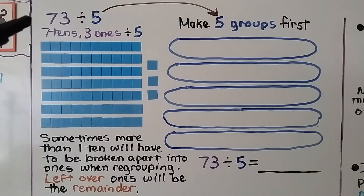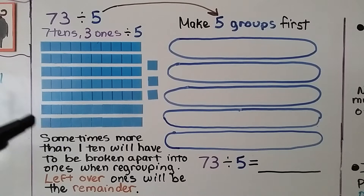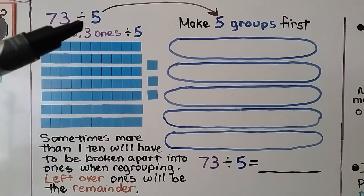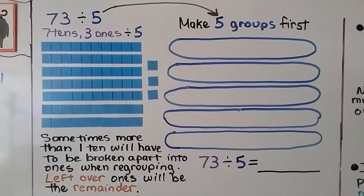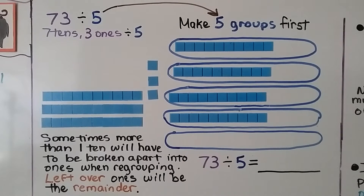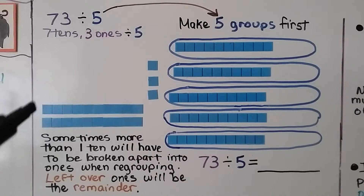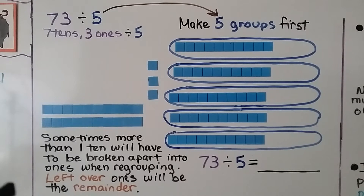Here we have 73 divided by 5 — that's 7 tens and 3 ones divided by 5. Our divisor is 5, so we make 5 groups. We share the tens equally, placing one 10 into each of the five groups. Now we have two 10s and 3 ones left over. Sometimes more than one 10 must be broken apart when regrouping, so we break these two tens into 20 ones.